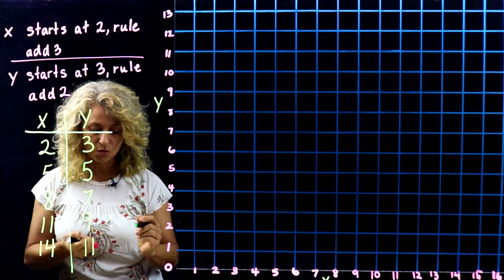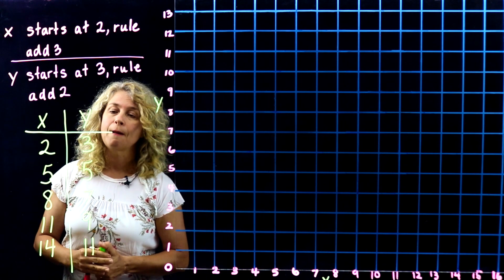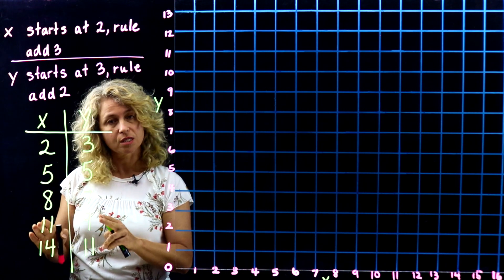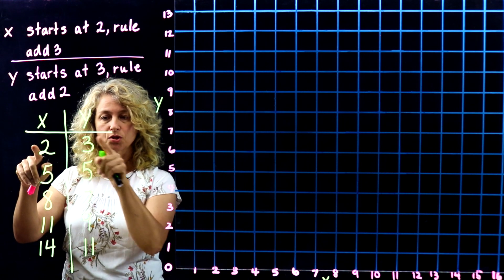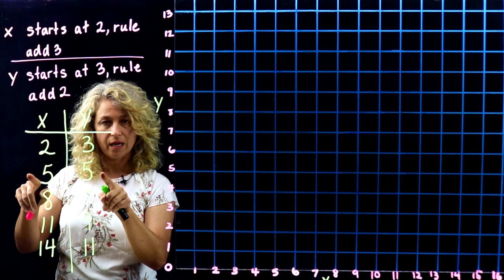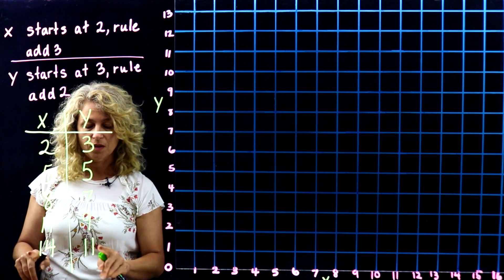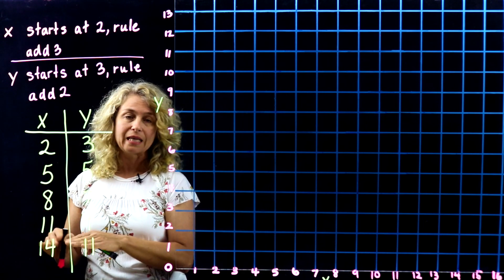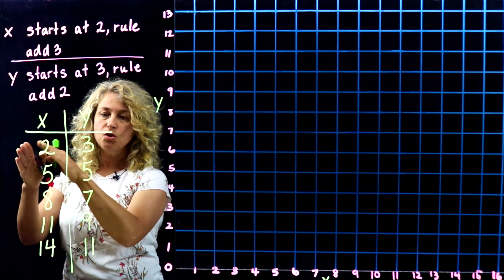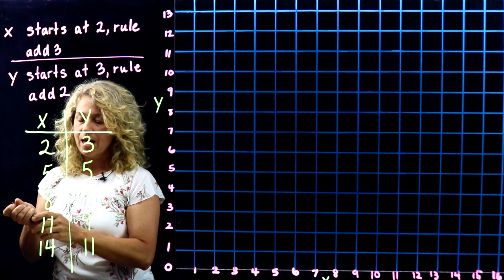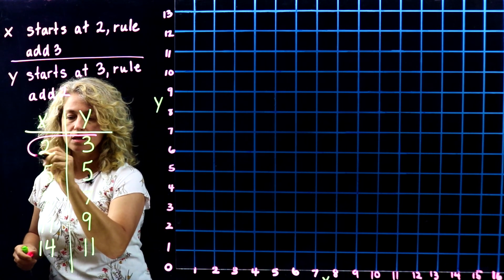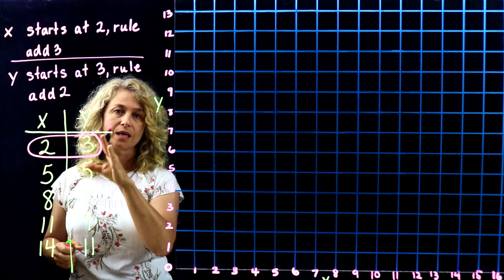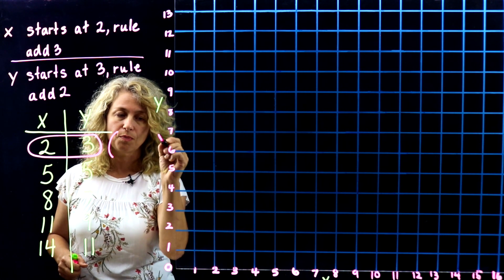The cool thing is that each one of these sets of numbers correspond. These are the first terms, second, third, fourth, and fifth terms. Each set lines up because of numerical order — these are corresponding terms, and they form an ordered pair.